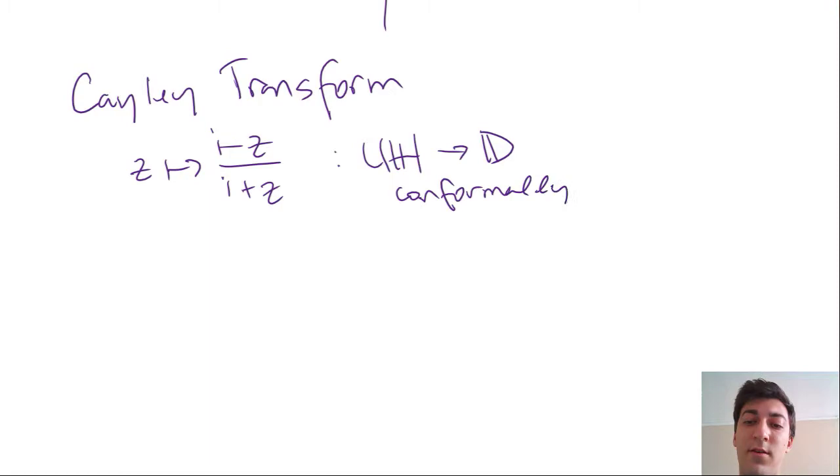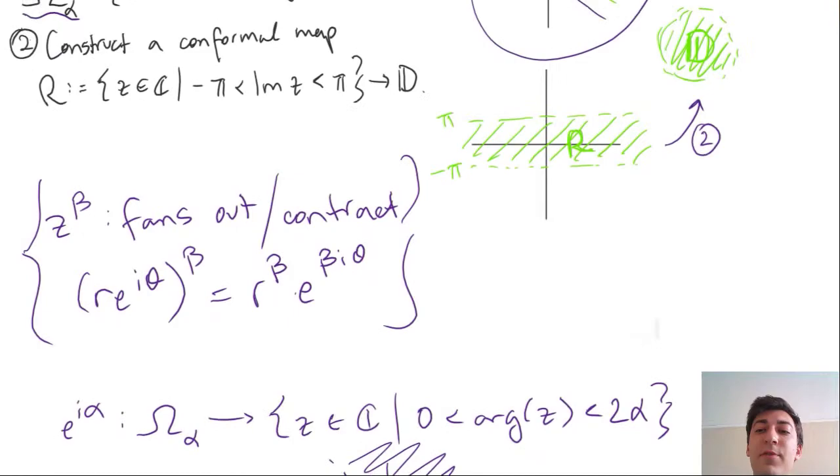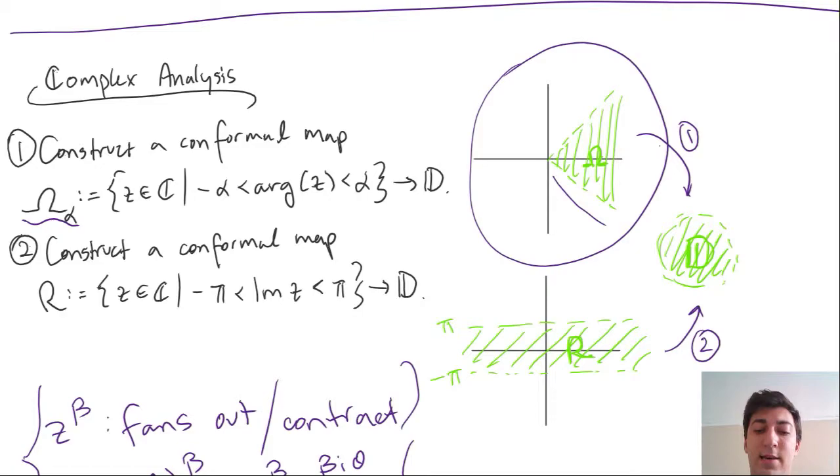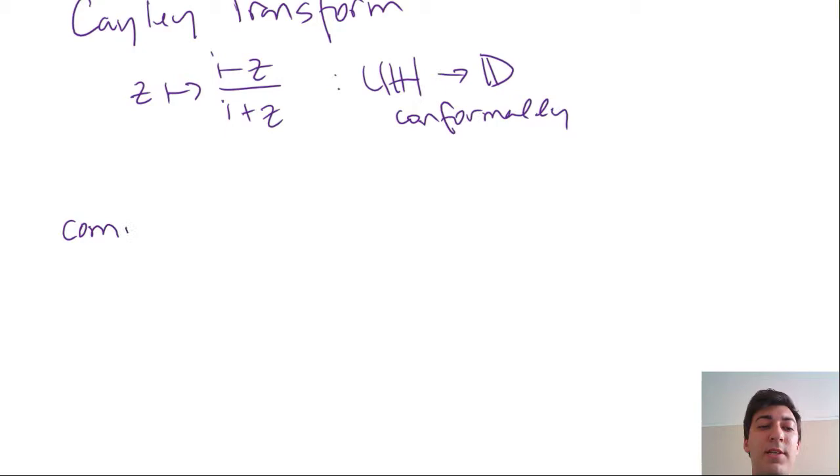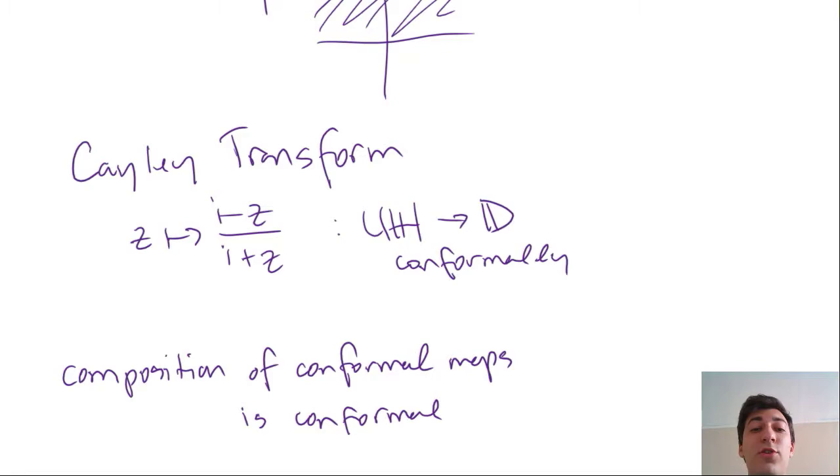So now, if we perform these three operations on our original region omega alpha, we get the disk. The only thing left to say is that the composition of conformal maps is conformal. Now, if your instructor wanted an explicit formula for this, then all you would have to do is by hand compose those maps and then try and write out maybe a nice, concise, simplified version once you get to the very end.